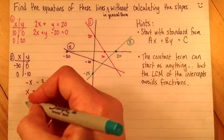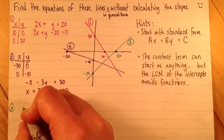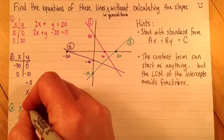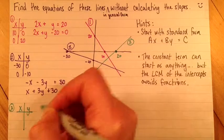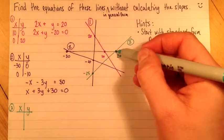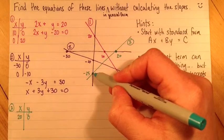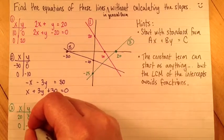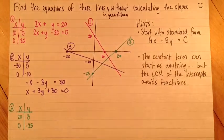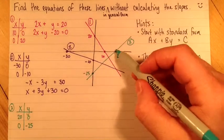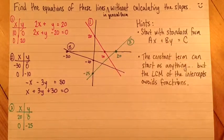And then for the green line, which is number 3, this point is 20, 0. And this point is 0, negative 25. So my lowest common multiple of 20 and 25 is 100.